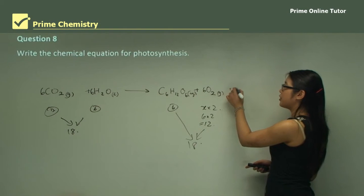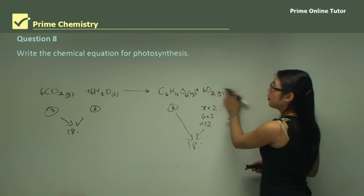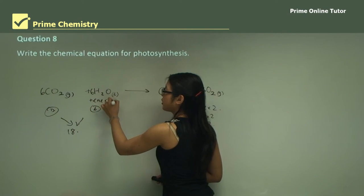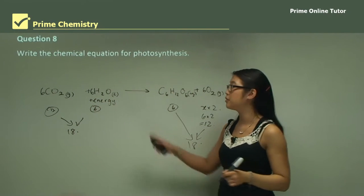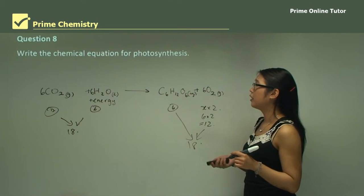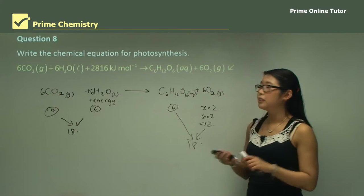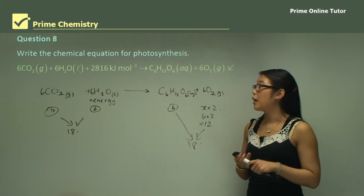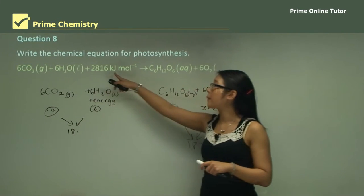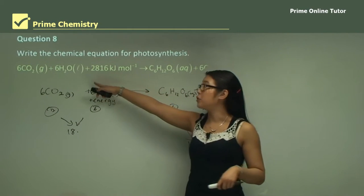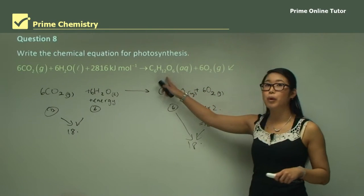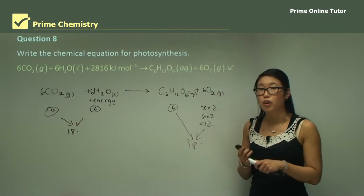We also have an energy term here — photosynthesis requires energy to break bonds before reforming them into sugars. So the full equation is: six CO2 plus six H2O plus 2816 kilojoules per mole gives one mole of glucose (C6H12O6) and six moles of oxygen.